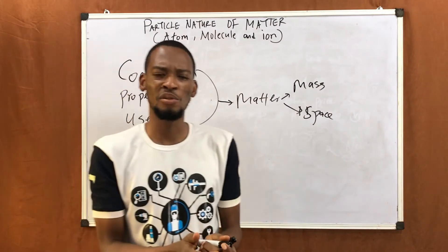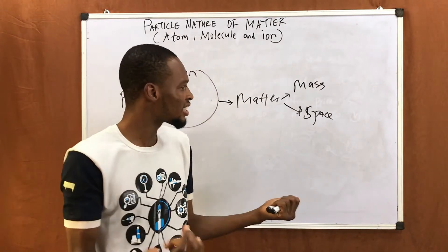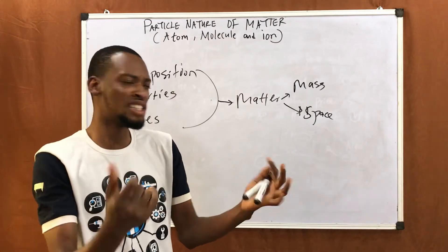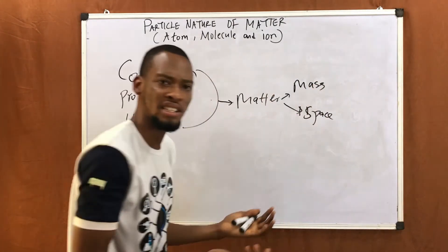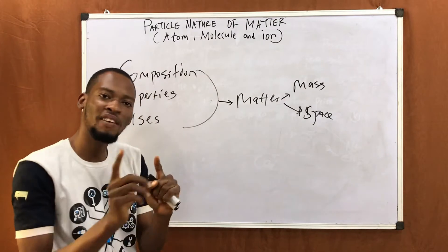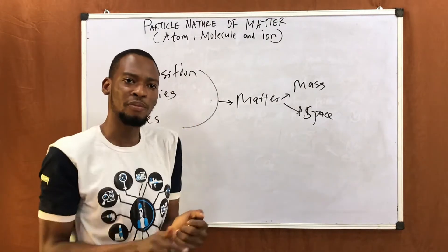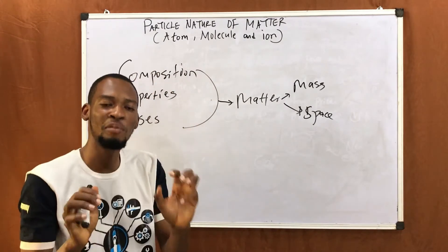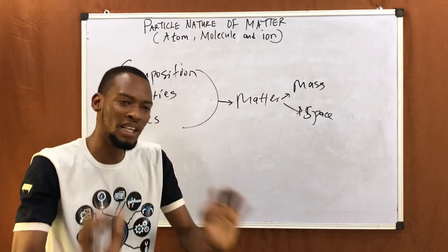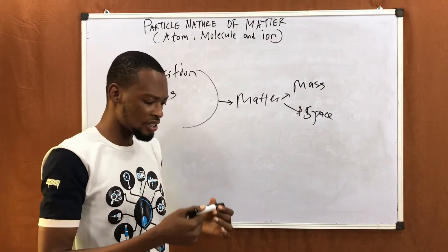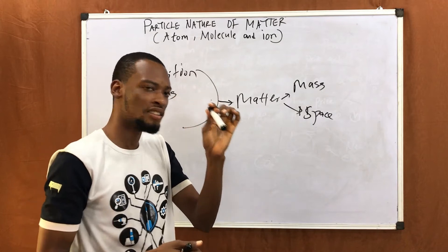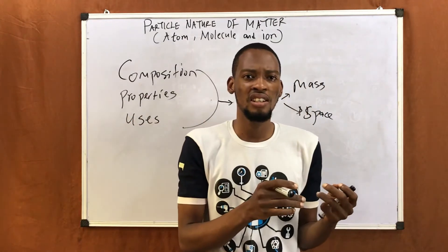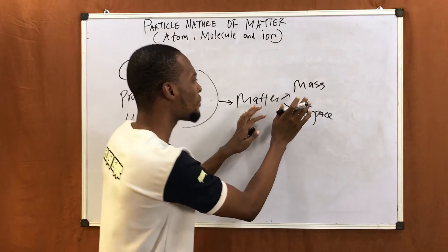Now, look around you. What can you see around? What can you feel? What occupies space and what has mass? You will discover that it is almost everything. Almost everything you see around is made up of matter or they are matter. For example, this marker, your TV board — they are made up of matter.